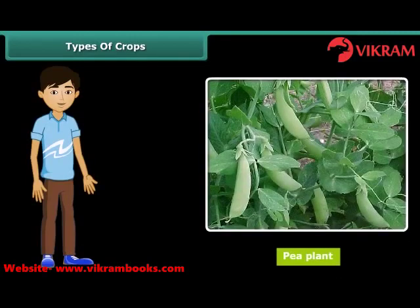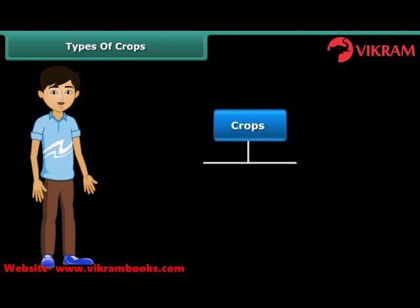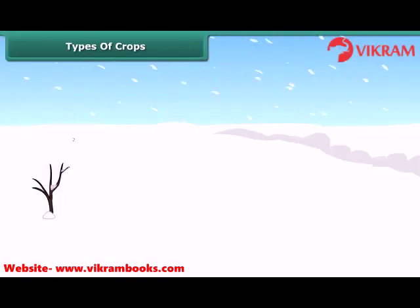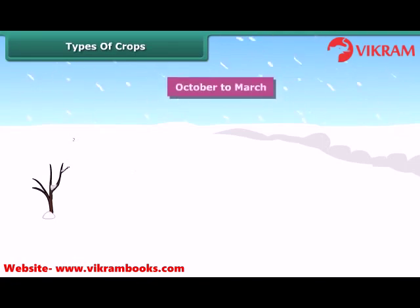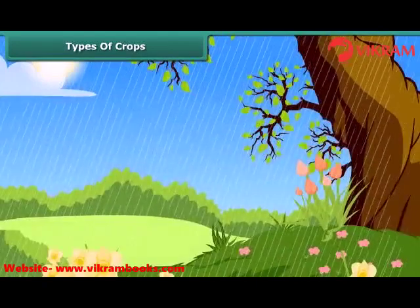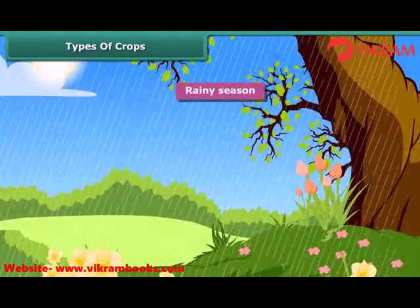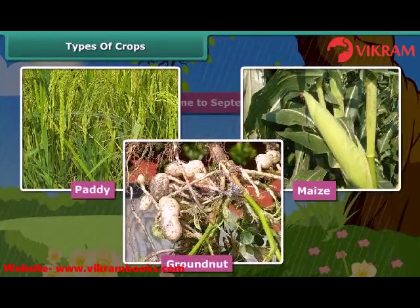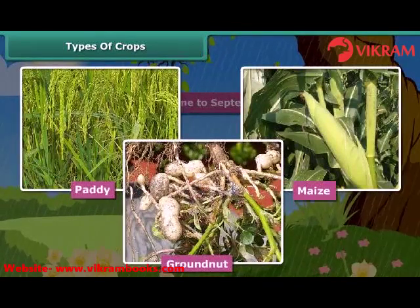If you wish to grow a pea plant in the hot season, you can't do it. Do you know the reason behind it? In India, crops are broadly classified into two categories on the basis of the season they are grown in. That is, Rabi crops and Kharif crops. Rabi crops are usually grown in the winter season from October to March. Wheat, gram and peas are examples of Rabi crops. Kharif crops are usually sown in the rainy season, generally from June to September. Paddy, maize, groundnut etc. are some common examples of Kharif crops. To grow crops, various activities are performed, which are known as agricultural practices.